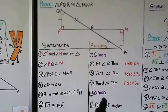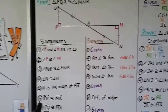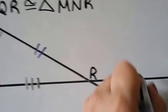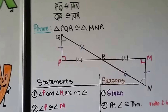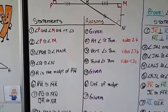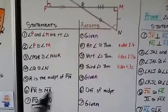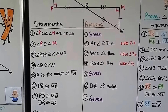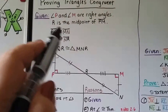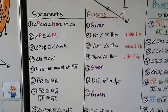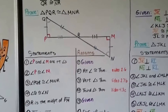Statement 5: R is the midpoint of PM — given. Statement 6: Segment PR is congruent to segment MR — definition of midpoint, since R is the midpoint. Statement 7: Segment PQ is congruent to MN, and segment QR is congruent to NR — from the given. Statement 8: Triangle PQR is congruent to triangle MNR — definition of congruent triangles, since all three pairs of angles and all three pairs of sides are congruent.